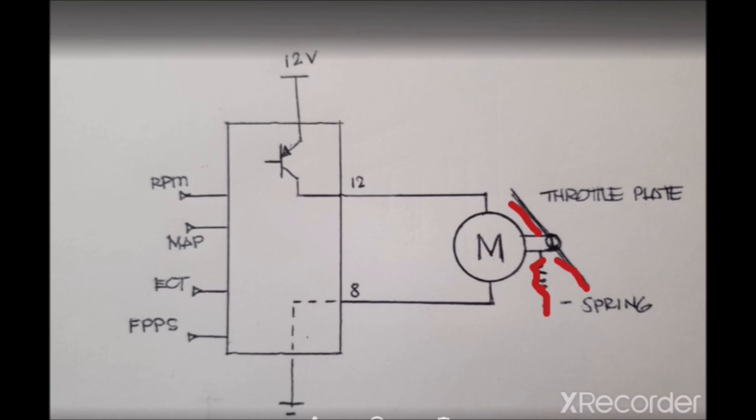Now for the motor to operate, we need a negative that is provided here on pin number 8, and we know that's always present. And then a pulsing signal is going to be provided here on the other end of that motor from pin number 12, which is going to come inside of that computer from a driver here.